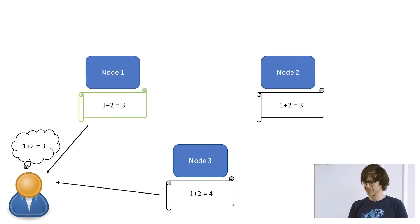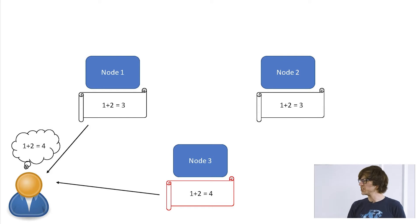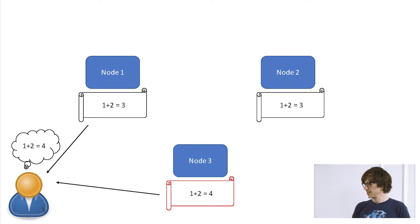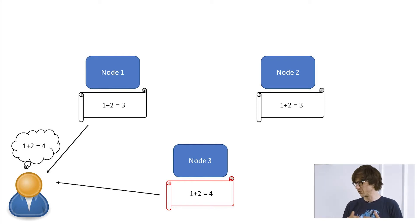Bob asks: 'But what if the cheating node is lucky and solves the guessing problem first?' Going back to the picture — Bob believes the node that answers the guessing problem correctly first, and in this case cheating node 3 was, by luck, able to solve the guessing problem first. So Bob now believes that 1+2=4, which is bad. Alice recognizes this.